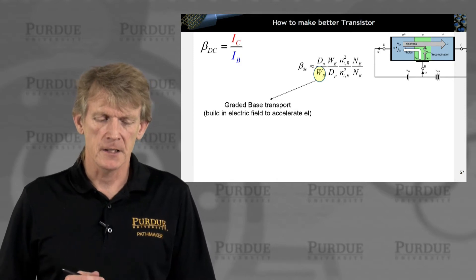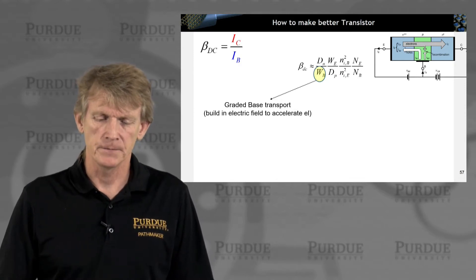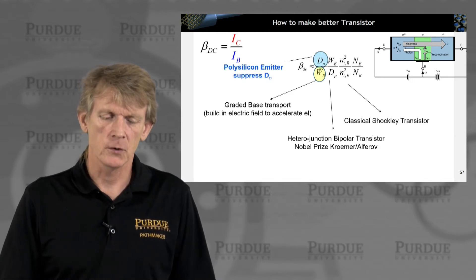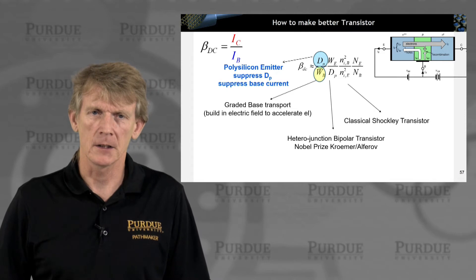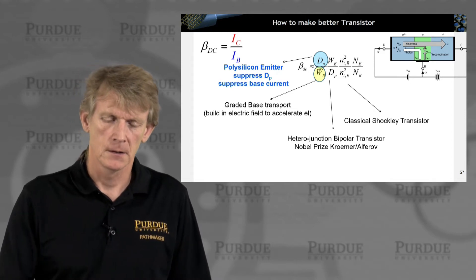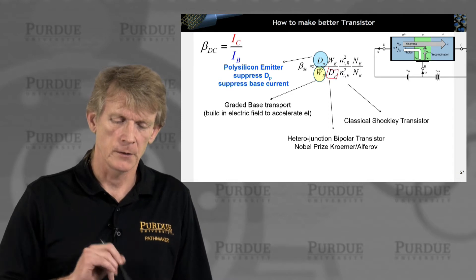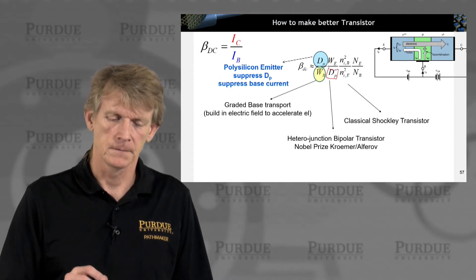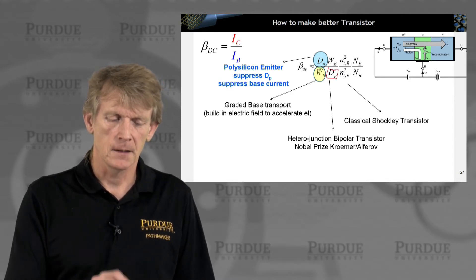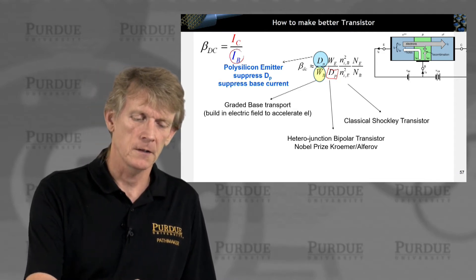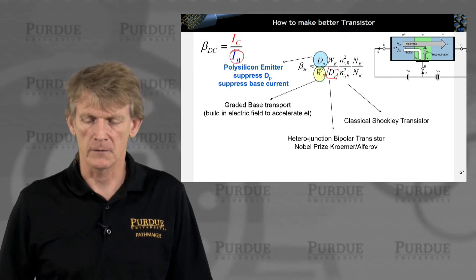One strategy here is graded base transport, heterojunctions, Shockley transistor. We'll talk about the polysilicon emitter to suppress DP, which should have been that one, make that smaller, and effectively suppress or reduce this base current here. So that's what we're aiming for.